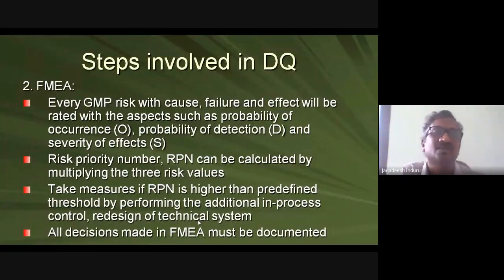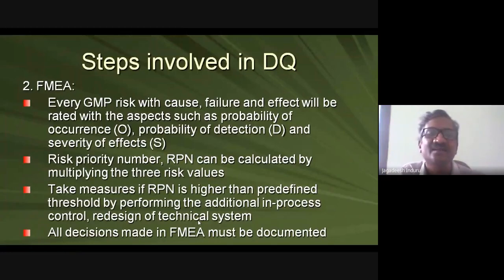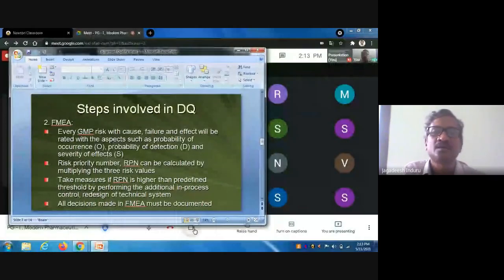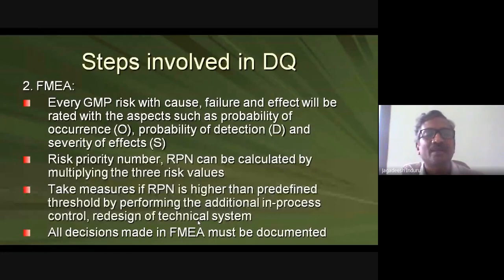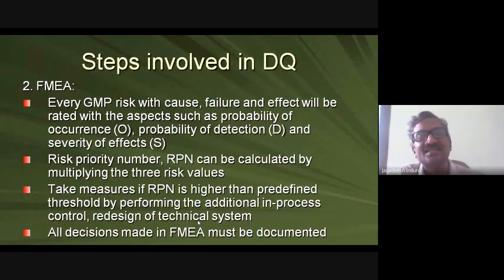In FMEA, every GMP risk with cause and failure effect is rated using three factors: probability of occurrence (rated say one to ten), probability of detection, and severity of effect on GMP. You multiply all three to get a Risk Priority Number (RPN). The factor with the highest RPN must be considered first. If RPN is higher than the threshold, the deficiency must be resolved by performing additional in-process controls or redesigning the technical specifications.